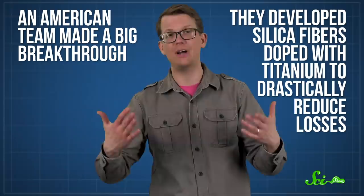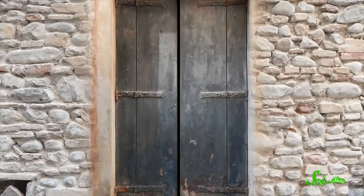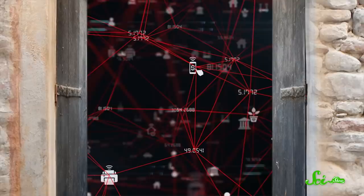And in 1970, an American team made a big breakthrough when they developed silica fibers doped with titanium to drastically reduce losses. Finally, light could travel down long fibers, and a sharp signal would come out the other end. These advances in fiber-optics eventually opened the door to the modern internet, since long, flexible fiber-optic cables are great for sending light packed with data over long distances.